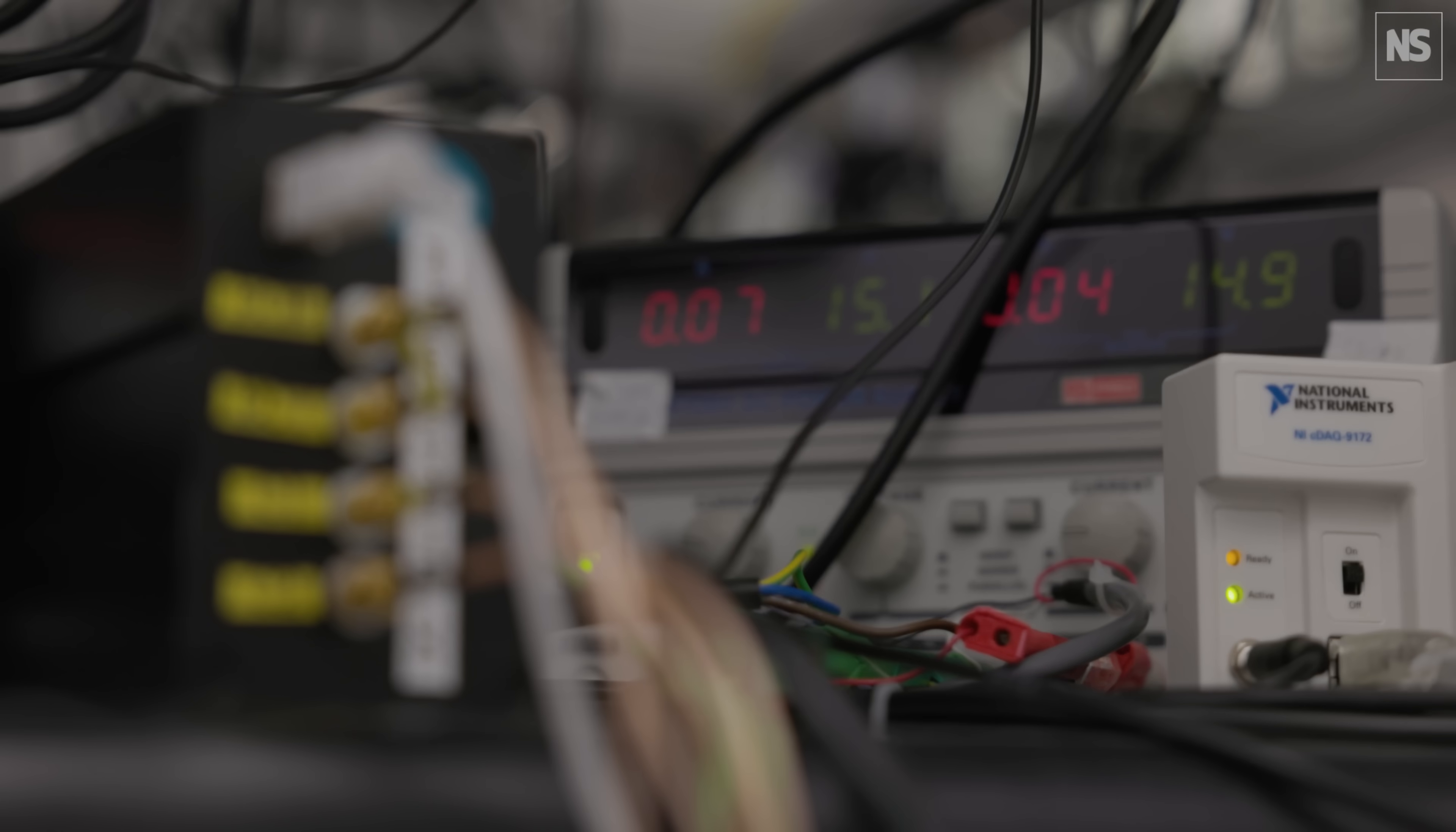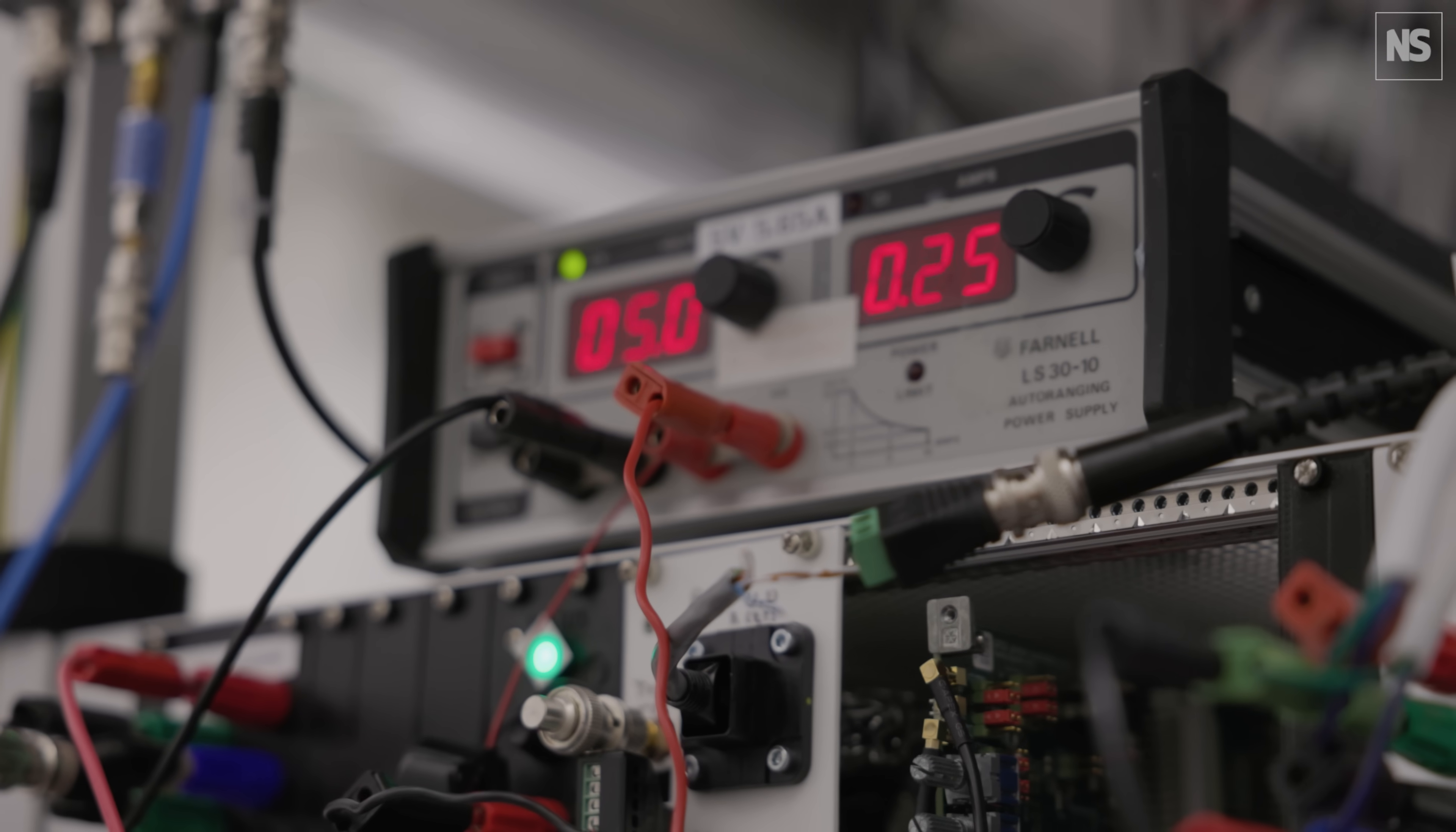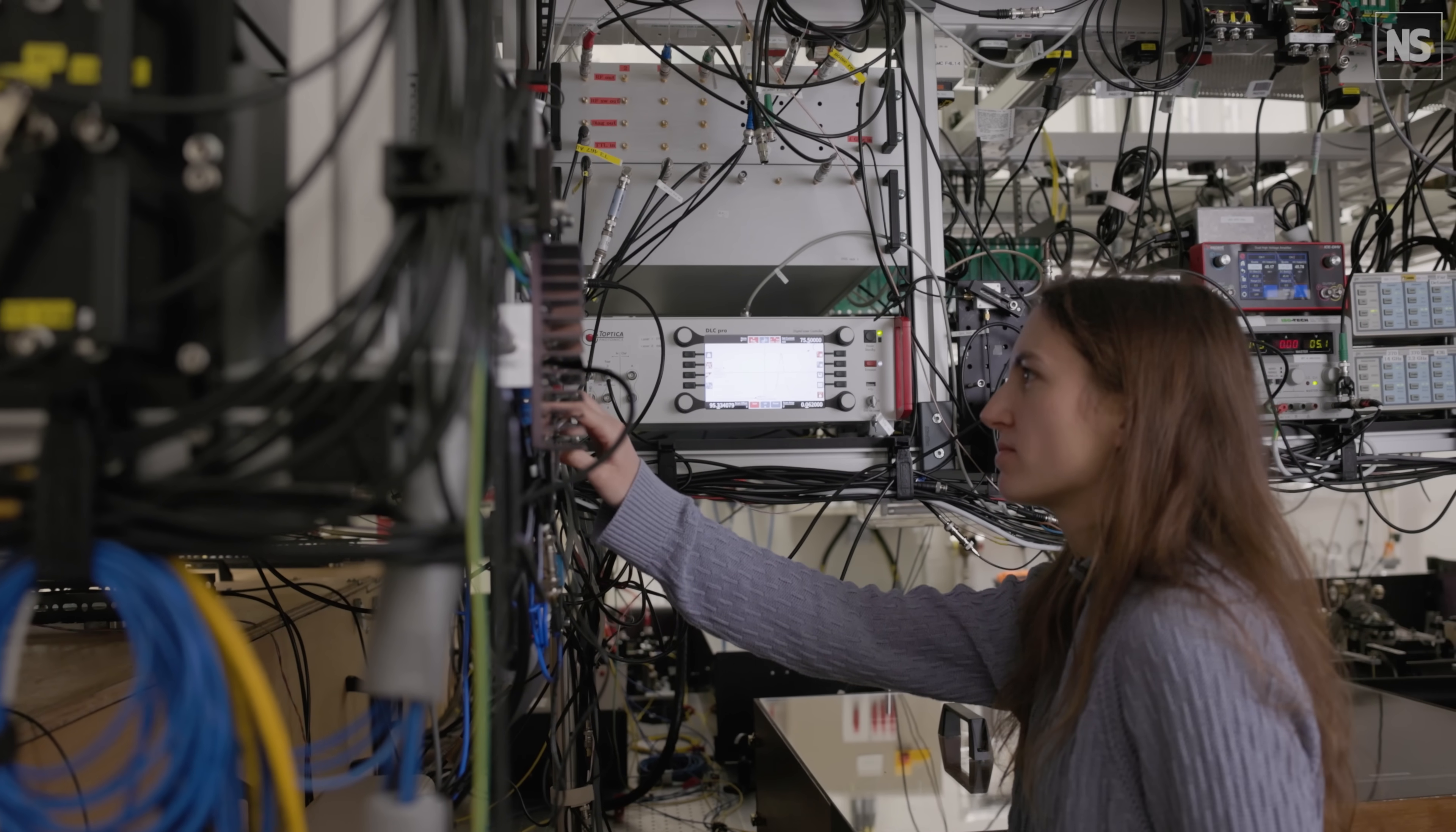A very interesting one is the geodesy application. We are able to detect a difference in height of one centimeter just by measuring a different optical clock frequency, because this is the level of precision that we can measure in terms of a change in the gravity potential at such a small level.